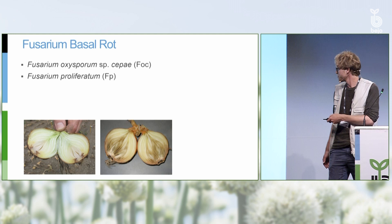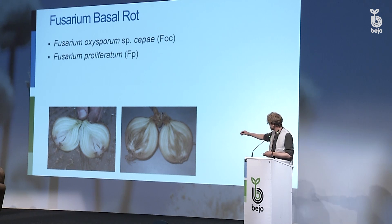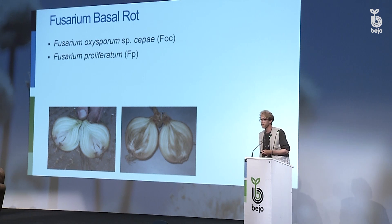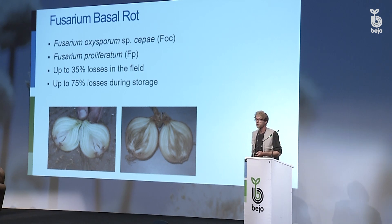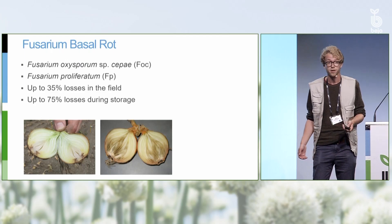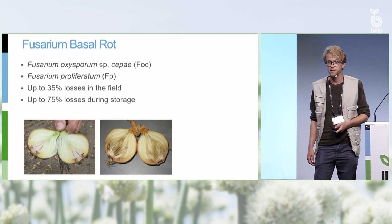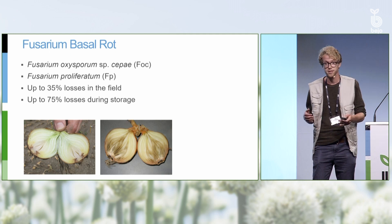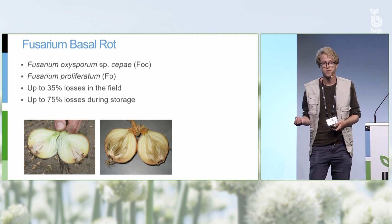Here you can see two pictures where you can clearly see the symptoms — very typical are the black lines growing from the roots into the bulb. The disease is mainly caused by two different species of Fusarium: Fusarium oxysporum f. sp. cepae and Fusarium proliferatum. They can cause up to 35% losses in the field and 75% losses during storage. They can not only attack onion — it's also observed in garlic, leek, and spring onions. It's also expected that due to climate change the distribution of these diseases will increase, so more regions will be affected and the damage will be even greater.